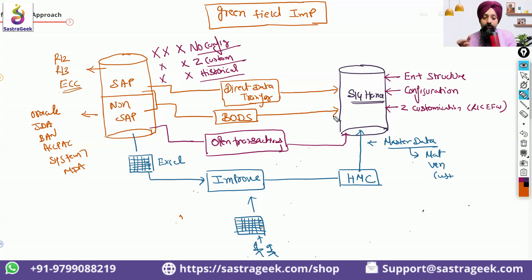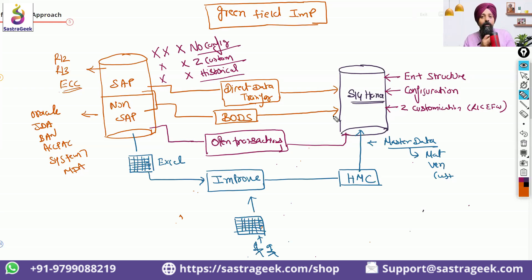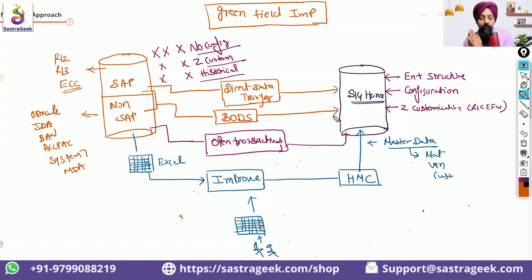So that would be our greenfield implementation — implementing a system completely from scratch. We don't bring any configuration, Z customization, or historical data from our existing system. It's like building a new home: you dig, lay the concrete, build the base and walls. You might bring some furniture from the old house — meaning the people and master data — but the full infrastructure is new. That is the essence of greenfield implementation.